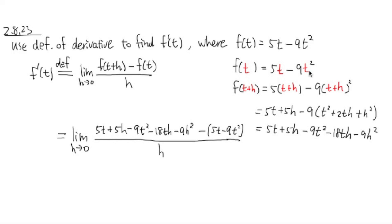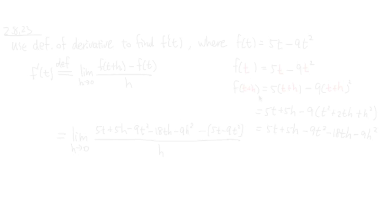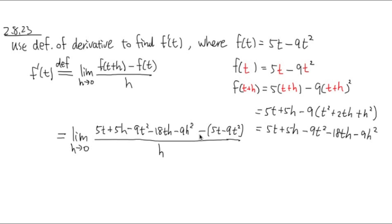This right here is f of t. And this right here is f of t plus h. And now I will have to distribute the negative into the parentheses. I will do that. That will give us negative 5t plus 9t squared.